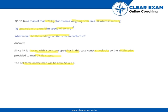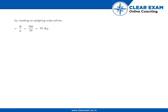As acceleration is equal to zero, using Newton's law of motion we can say that R minus mg, that is mass into gravity, is equal to mass into acceleration. Since mass into acceleration is zero, we can equate this as R equals mass into gravity. Therefore the resultant force is 70 into 10, that is 700 Newtons.